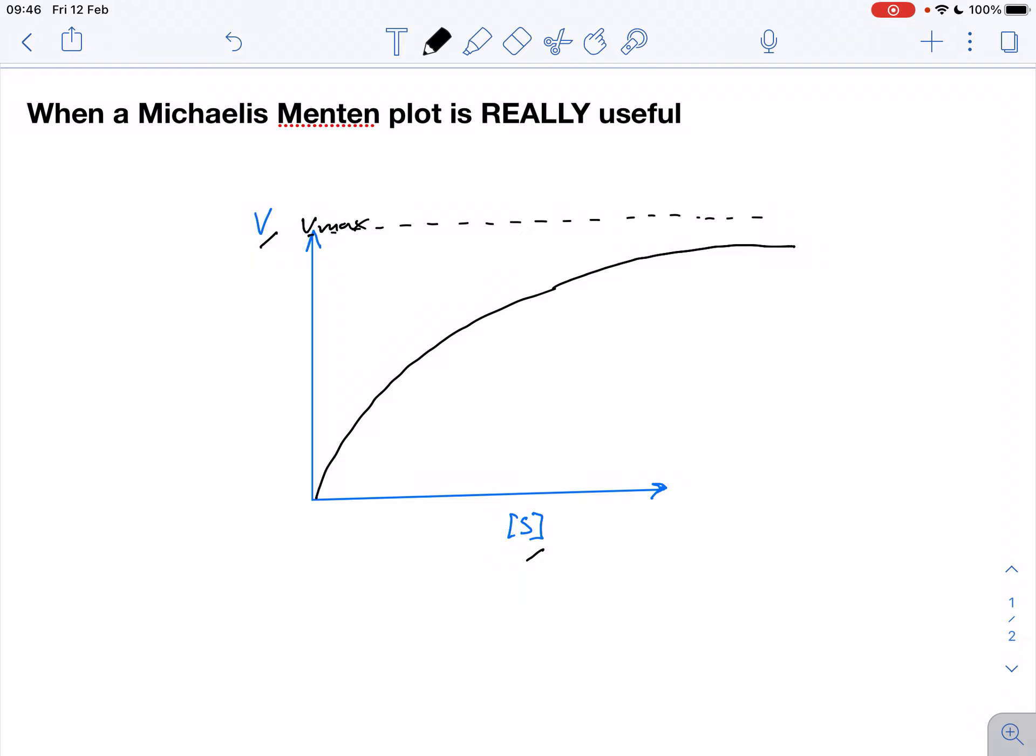But occasionally we can also see deviations from this curve. So for example, we might observe something like this. So we have a very slow start of the reaction, and only when we add more and more substrate we see all of a sudden something like this. So we see what is called a sigmoidal curve, sigmoidal or S-shaped form of the curve, which very clearly indicates that the enzyme does not follow the classic Michaelis-Menten rules.